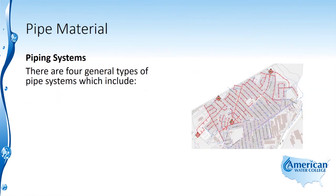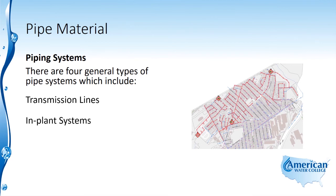There are four general types of pipe systems, which include transmission lines, in-plant systems, distribution mains, and service lines.